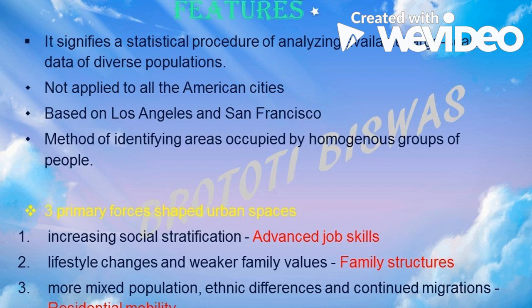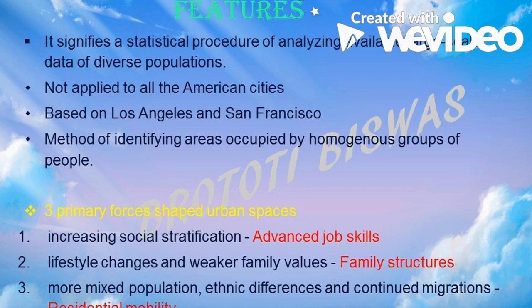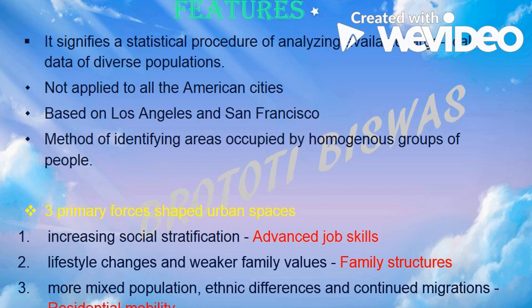Social area analysis is based upon the thought that our society is very complex — not like what the concentric zone model suggested. It is a complex modern society, and because of that, there are various forces which distinguish the modern society from the traditional society. These are three primary forces: increasing social stratification leading to advanced job skills; lifestyle changes and weaker family values resulting in a family structure force; and mixed population with ethnic differences and continued migration resulting in residential mobility.